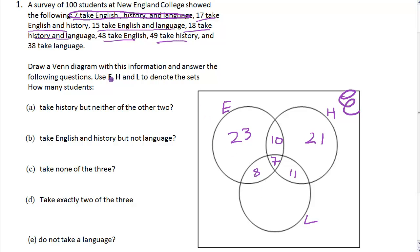And this one, there's 38 doing Language. Let's take off this 8, that gives us 30. Take off 7 leaves us 23. Take off 11 leaves us 12.